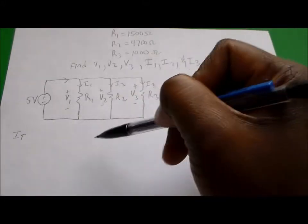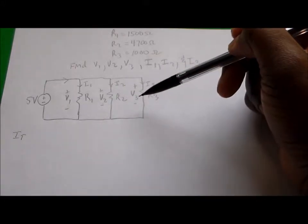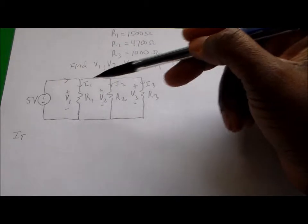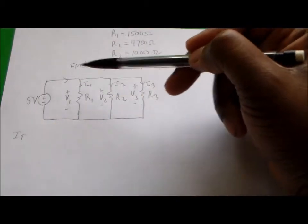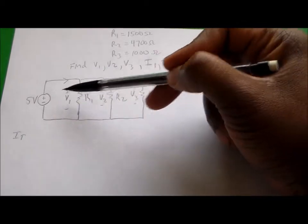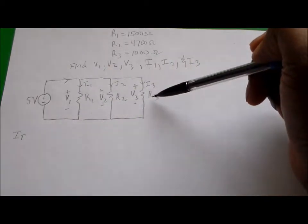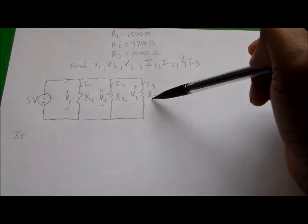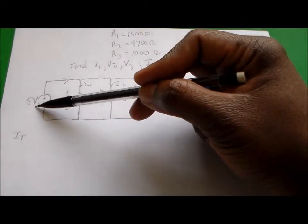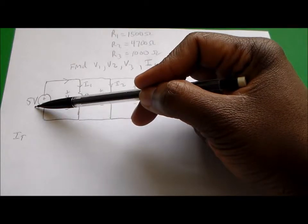The easiest way to solve this problem is to realize this: the 5 volt voltage source is in parallel to all three resistors. It's in parallel with resistor 1, resistor 2, and resistor 3.